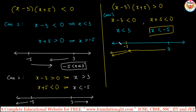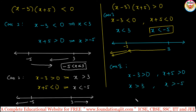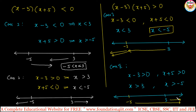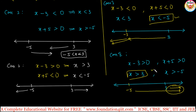For case 2 with the product greater than 0, taking both positive: x minus 3 greater than 0 and x plus 5 greater than 0. This gives x greater than 3 and x greater than minus 5. On the number line, x greater than 3 covers values to the right of 3, and x greater than minus 5 covers values to the right of minus 5. The common part is x greater than 3. So the two solutions together are x greater than 3 or x less than minus 5.